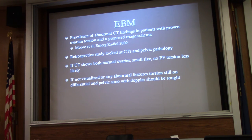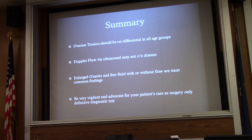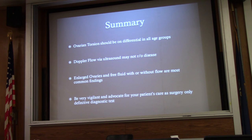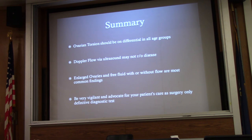In summary: torsion should be on your differential in all age groups. Normal Doppler flow on ultrasound does not rule out the disease. It's important to always keep this on your differential even when flow is present. You can visualize the ovaries yourself — if the patient is pregnant or you're doing an ultrasound anyway, take a look and visualize both adnexa. Enlarged ovaries with free fluid, with or without flow, are the most common findings.